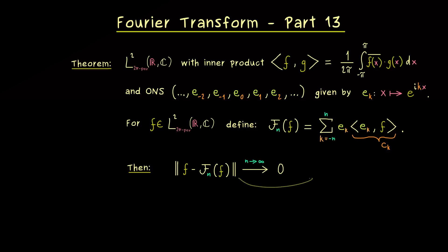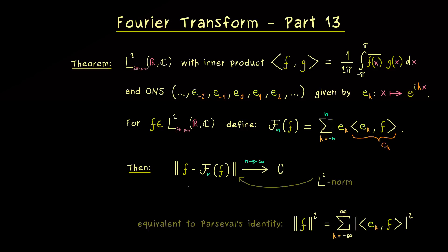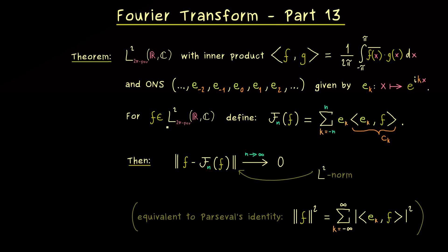This is important — it works with respect to the L2 norm. As you might remember from former videos, this statement is equivalent to Parseval's identity on L2. Parseval's identity tells us that the norm squared can be calculated using the Fourier coefficients. We have already shown Parseval's identity for some functions in L2, and the quest of this video is to extend this to all functions in L2.